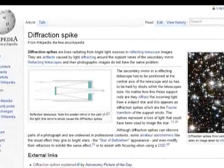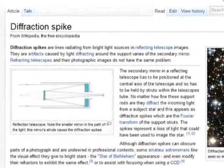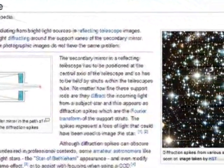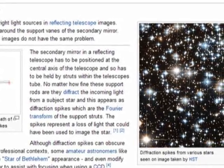Diffraction spikes are lines radiating from bright light sources in reflecting telescope images. They are artifacts caused by light diffracting around the support veins of the secondary mirror.